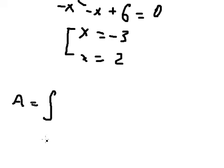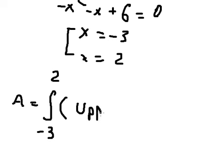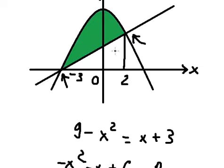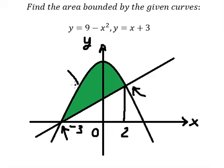The area should be from negative 3 to positive 2. We need to use the upper function minus the lower function. This one is the upper function, and this one is the lower function, because it has the higher value of y compared to the line in here.